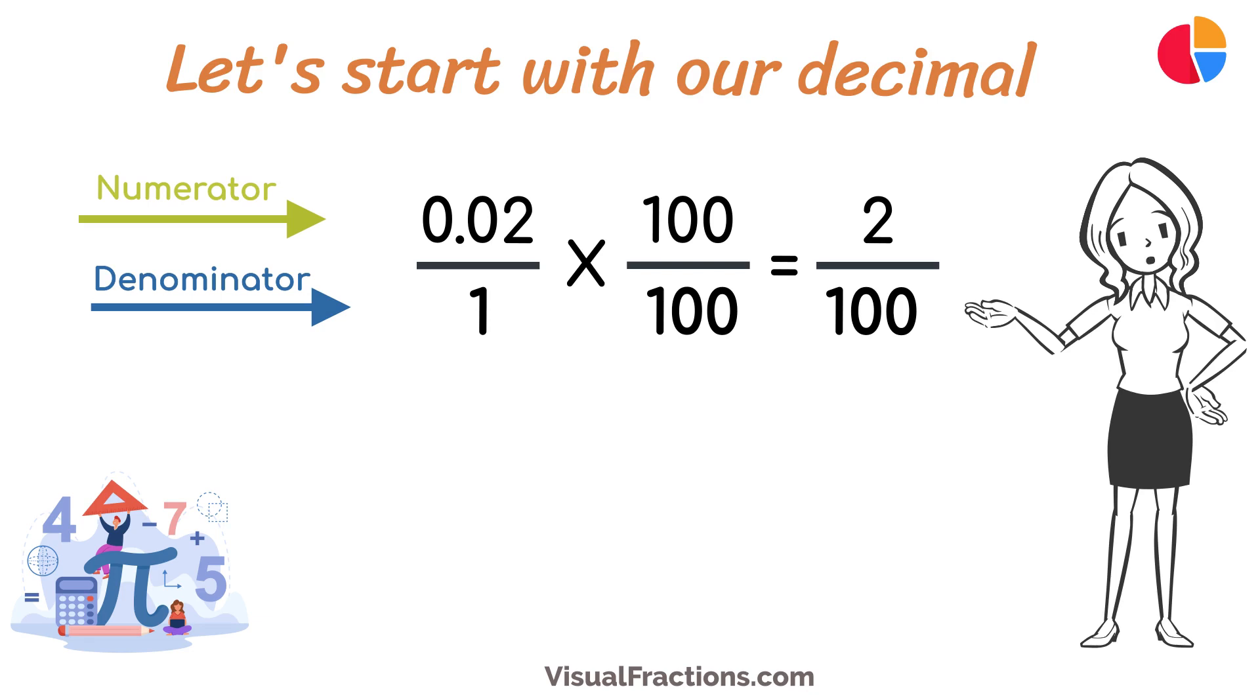Next, we simplify. Both the numerator and the denominator in 2 one-hundredths are divisible by 2, the greatest common divisor. Divide 2 by 2 to get 1 and divide 100 by 2 to get 50.